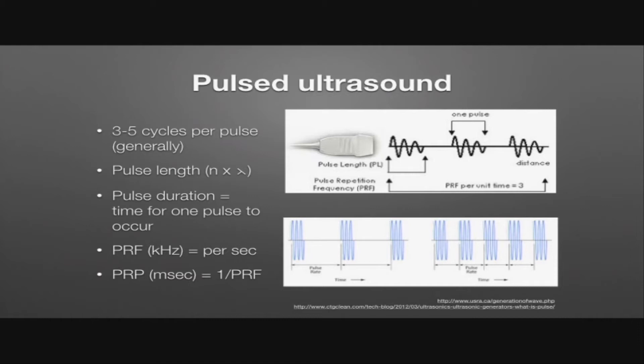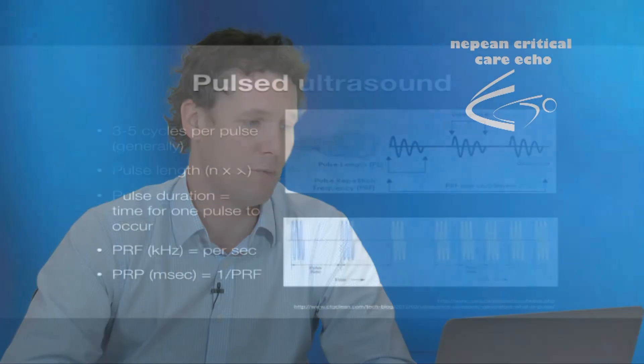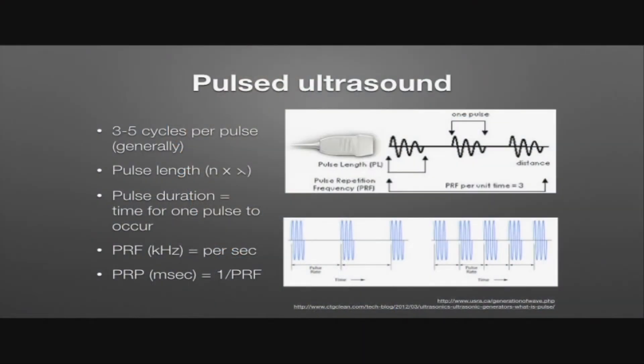Based on this, we can get an idea of what the pulse length is, where we take the wavelength, multiply it by the number of cycles in that pulse, and we will get the pulse length. Considering it over time rather than distance, if we know what the period is — the time taken for one cycle — and we know the number of cycles in the pulse, we can then get an idea of what the pulse duration is.